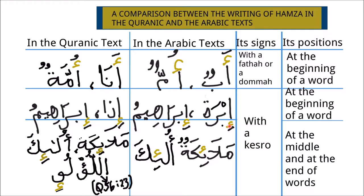Also, in Ibrahim, the Hamza is written below the Alif. In the Quranic text, Idha, which means when, starts with a Hamza which is written below an Alif, and the Hamza carries a Kasra sign. Ibrahim also is written the same way it is written in the Arabic text.